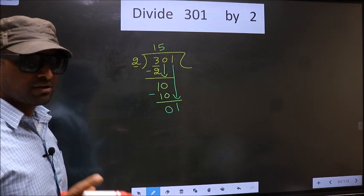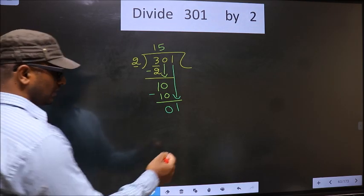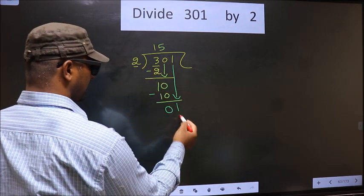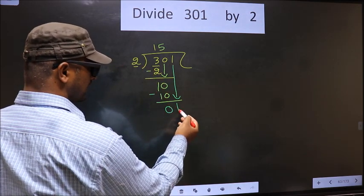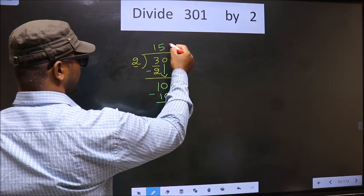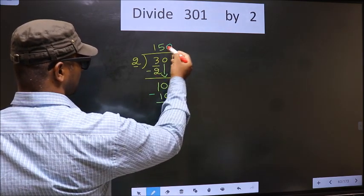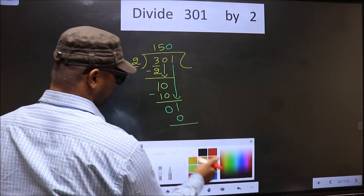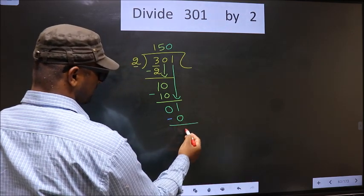Instead, what you should think of is, what number should we write here? If we write 2 here, that is larger than 1. So what we do is, we take 0 here. So 2 into 0, 0. Now you subtract. 1 minus 0, 1.